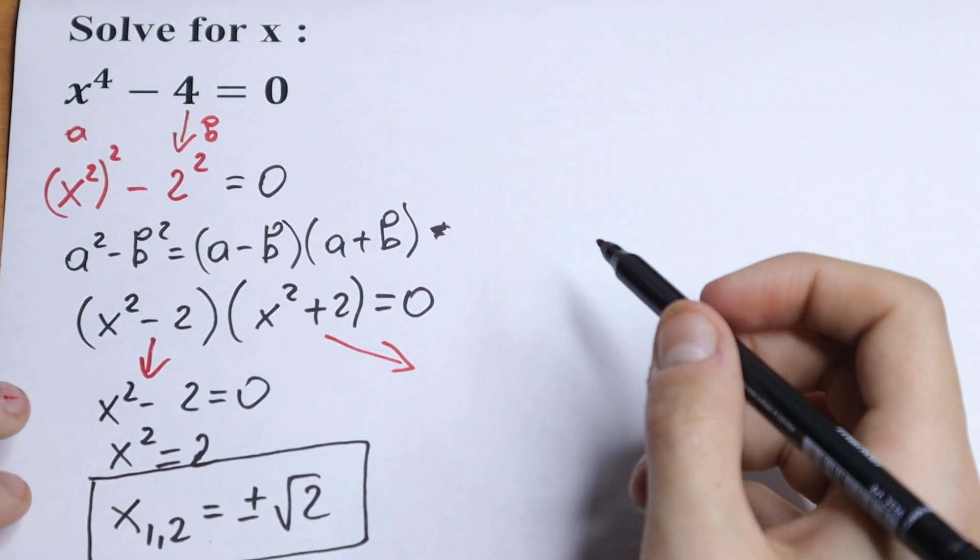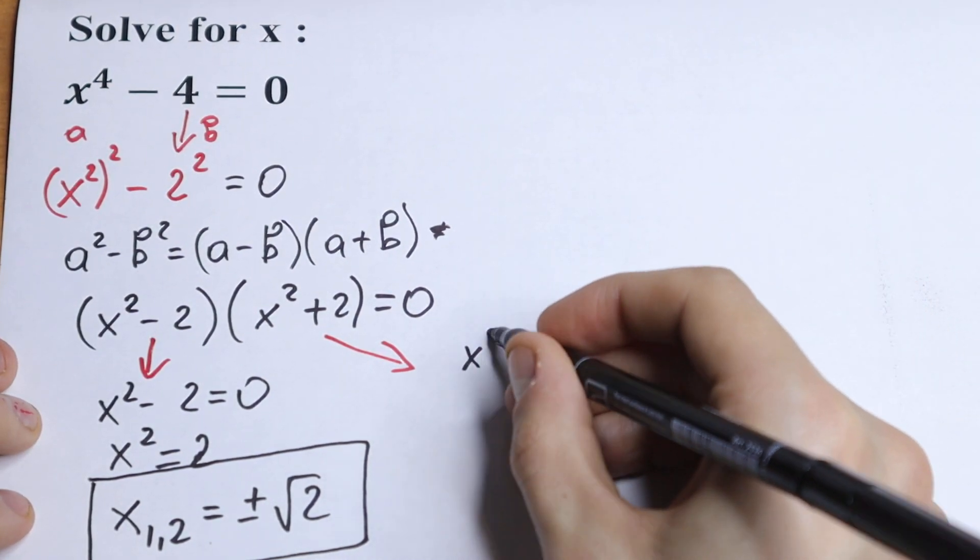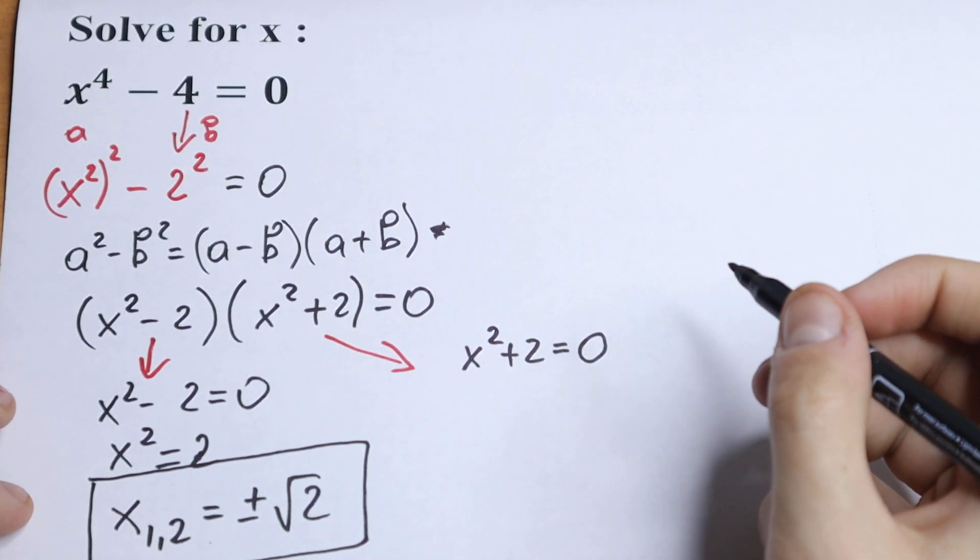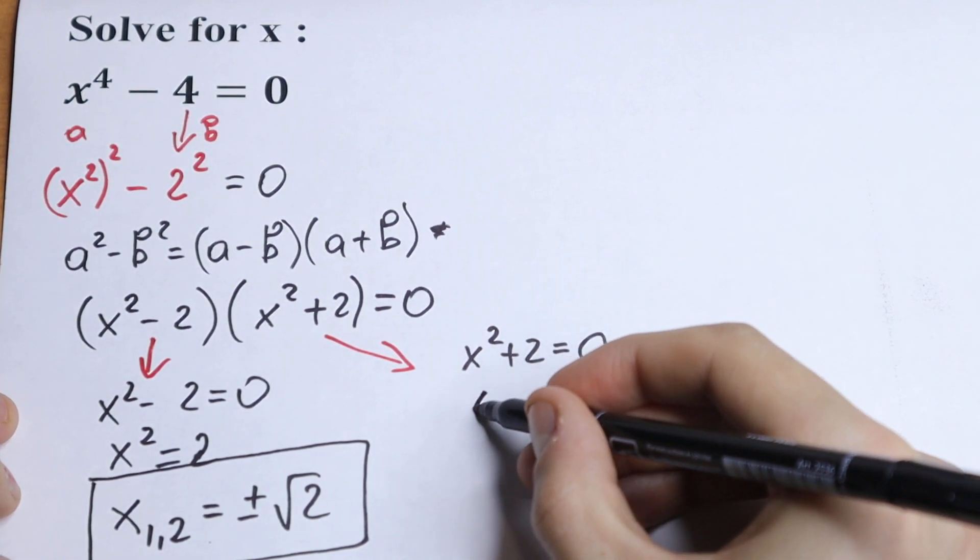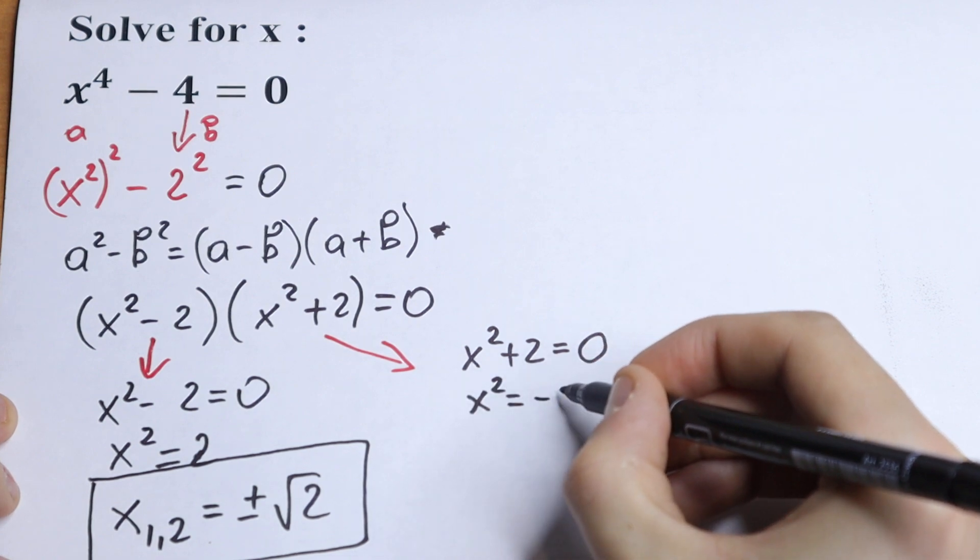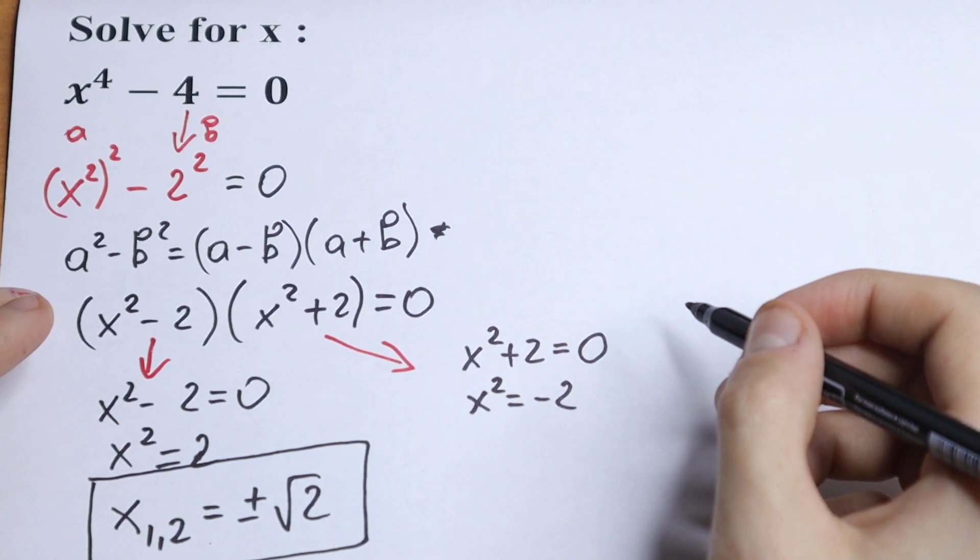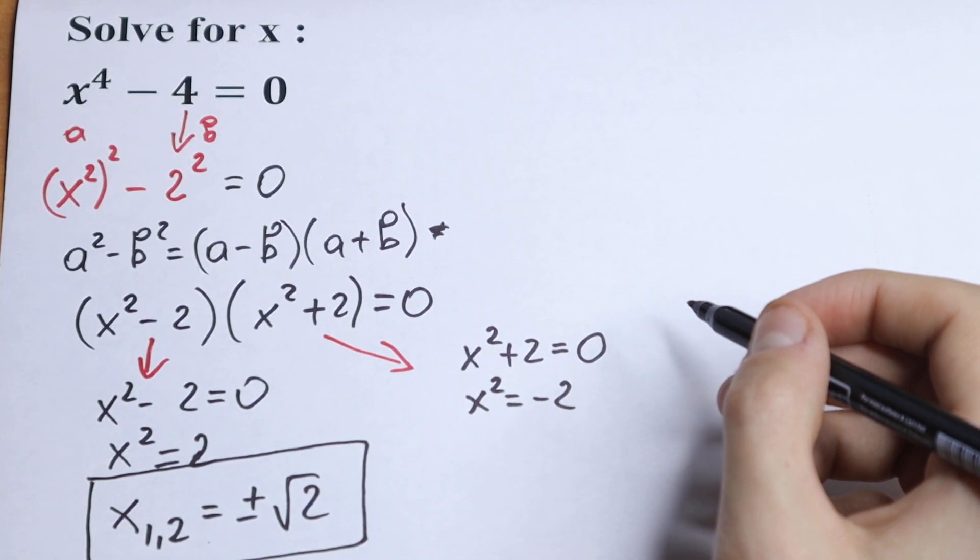Take a look right here. We will have x square plus 2 equal to 0. Using the same logic, x square equal to minus 2. And as you can see this x3 and x4 will be our complex roots.